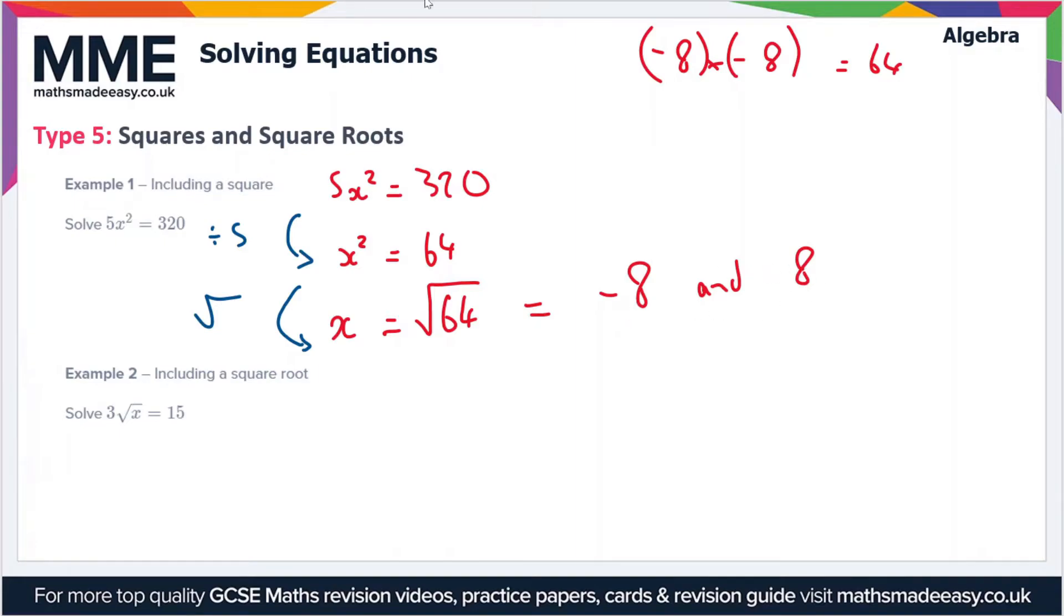Whenever you have an equation with a squared term in it, you're always going to get two solutions. Moving on to the second example: this time we have 3√x equals 15.